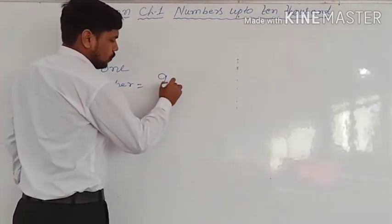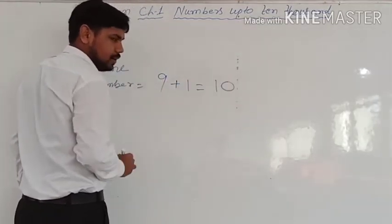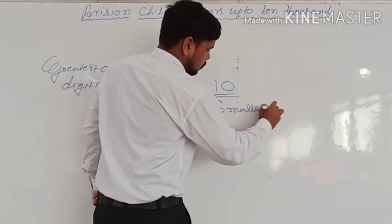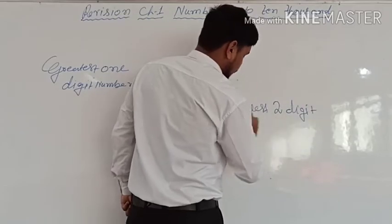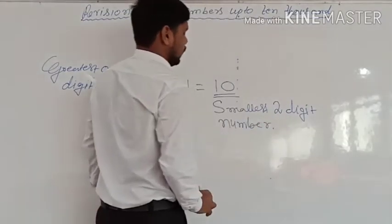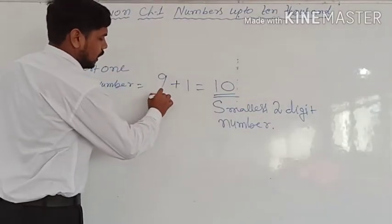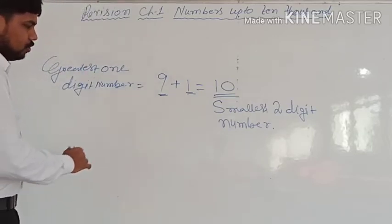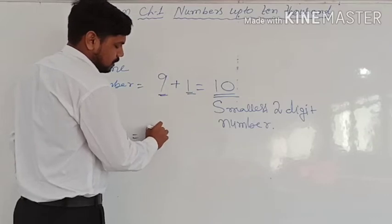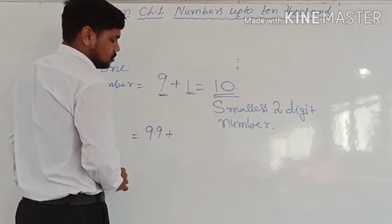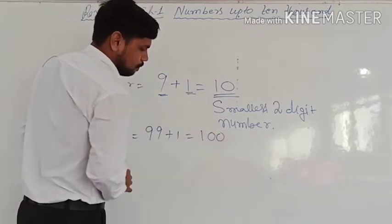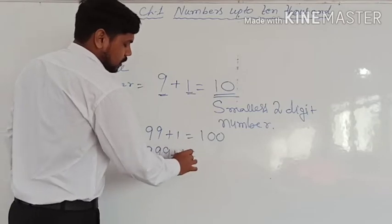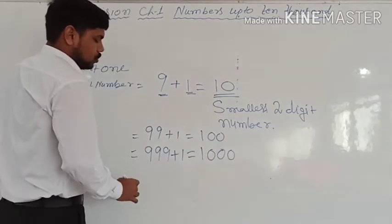If you add 1 to 9, you get 10, which is the smallest two-digit number. So adding 1 to the greatest one-digit number gives you the smallest two-digit number. The greatest two-digit number is 99, and adding 1 gives you the smallest three-digit number. The greatest three-digit number is 999, and adding 1 gives the smallest four-digit number. This pattern continues for each.